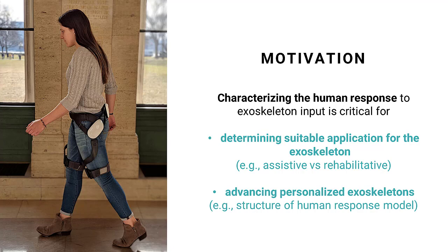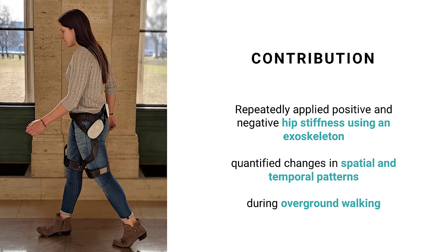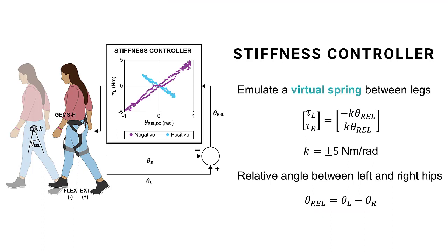In this study, we repeatedly applied either positive or negative hip stiffness using the Samsung hip exoskeleton, as shown here, and subsequently quantified the changes in spatial and temporal patterns during overground walking. We emulated a virtual spring between the two legs and set the stiffness value to either positive or negative 5 newton meters per radian. Essentially, the positive stiffness controller acted to push the legs together, whereas the negative stiffness controller acted to pull the legs apart from one another.